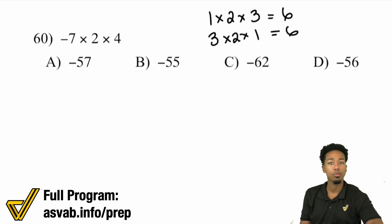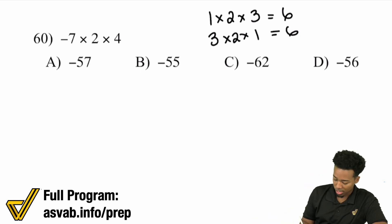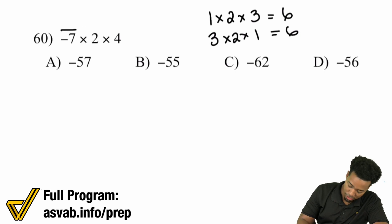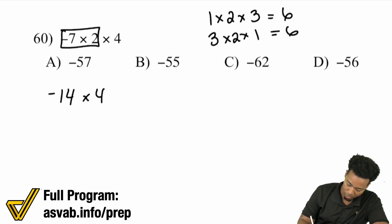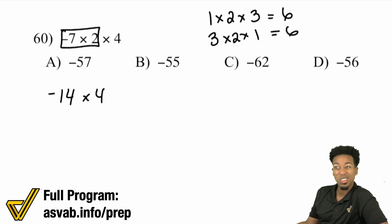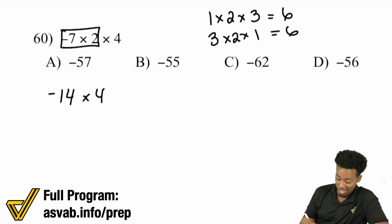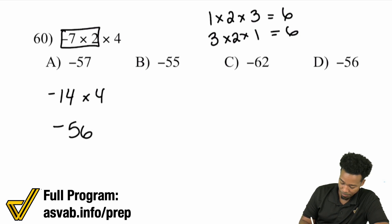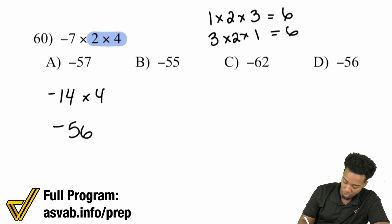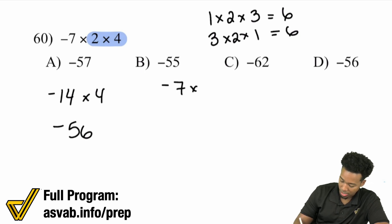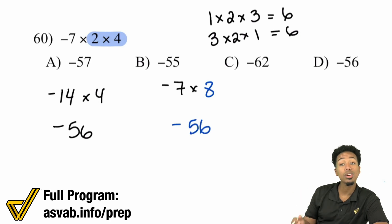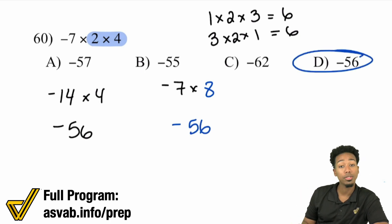So instead of seeing this as negative 7 times 2 equals negative 14 times 4 — where you might not realize that's negative 56 — if you looked at it differently: do 2 times 4 first, that would be negative 7 times 8. Negative 7 times 8 is negative 56, and you can realize that a lot faster.